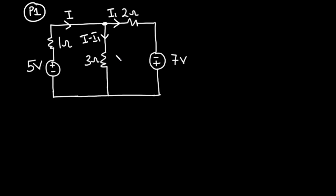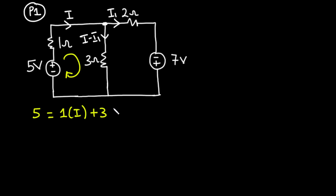After assigning currents we consider each loop at a time using Kirchhoff's voltage law, which states that the sum of the voltage sources equals the sum of voltages dropped across the passive elements. Considering the first loop moving in the clockwise direction: 5 volts equals current i flowing through the 1 ohm resistor, giving 1 times i, plus 3 times the quantity i minus i1 flowing through the 3 ohm resistor.